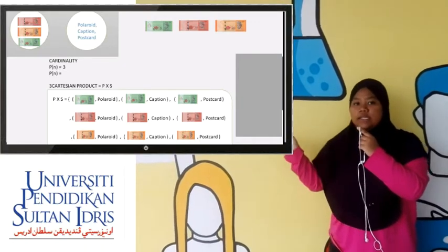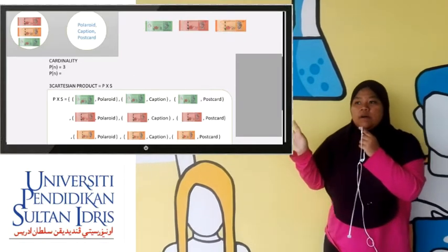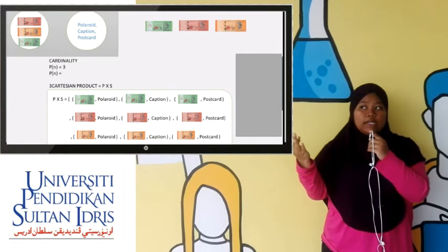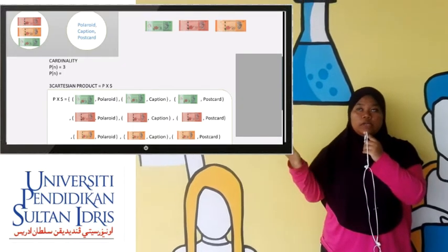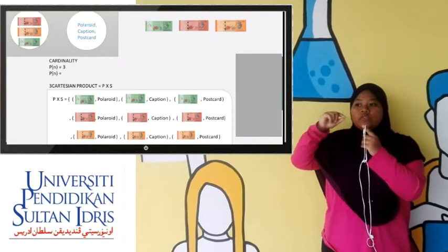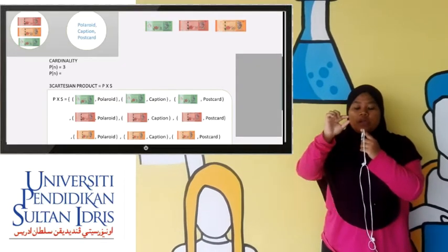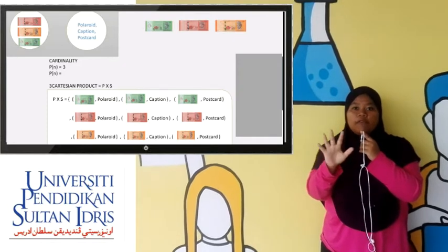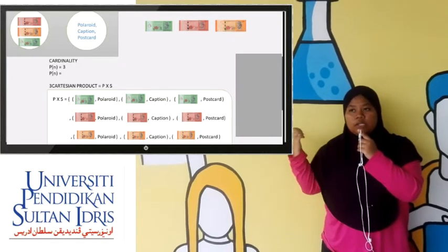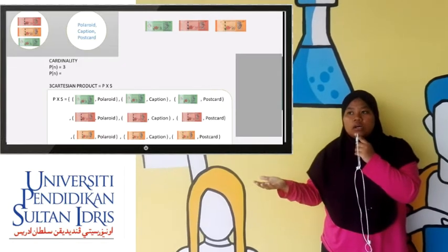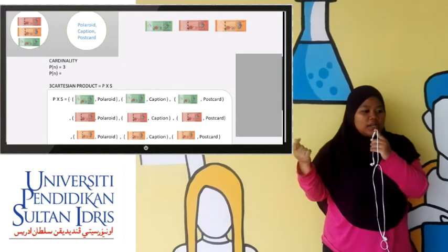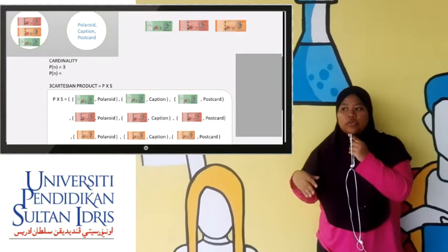The cardinality: the Boft printing photo has provided three different sizes, also with three different prices for each photo. You can choose whether you want to take five ringgit for the type of Polaroid, caption, or postcard.